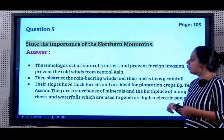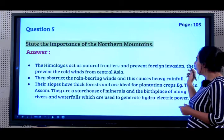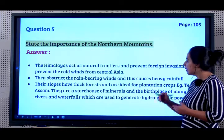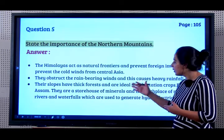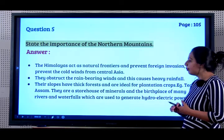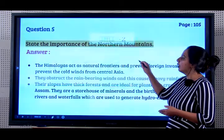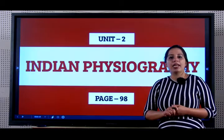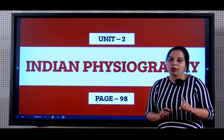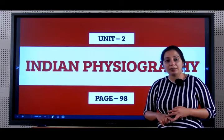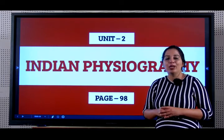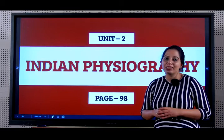State the importance of the Northern Mountains. The Himalayas act as natural frontiers and prevent foreign invasion. They prevent the cold winds from Central Asia. They obstruct the rain-bearing winds and cause heavy rainfall. Their slopes have thick forests and are ideal for plantation crops, example tea in Assam. They are a storehouse of minerals and the birthplace of many rivers. So students, this brings us to the end of the chapter on Indian Physiography. I hope you all will work hard, answer all the practice questions, review questions, and score more points. Goodbye, see you to learn the next chapter.